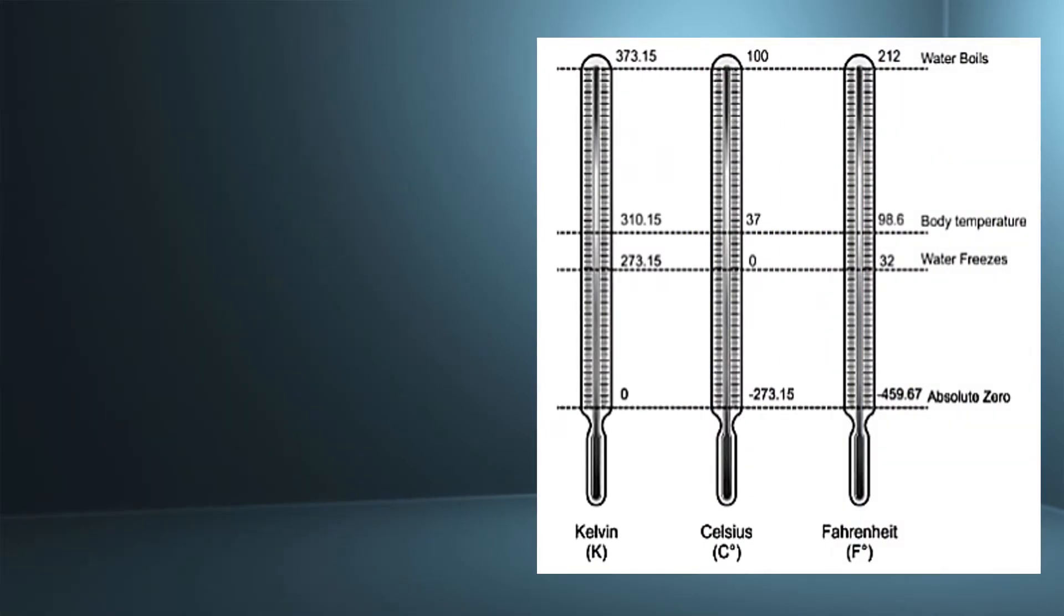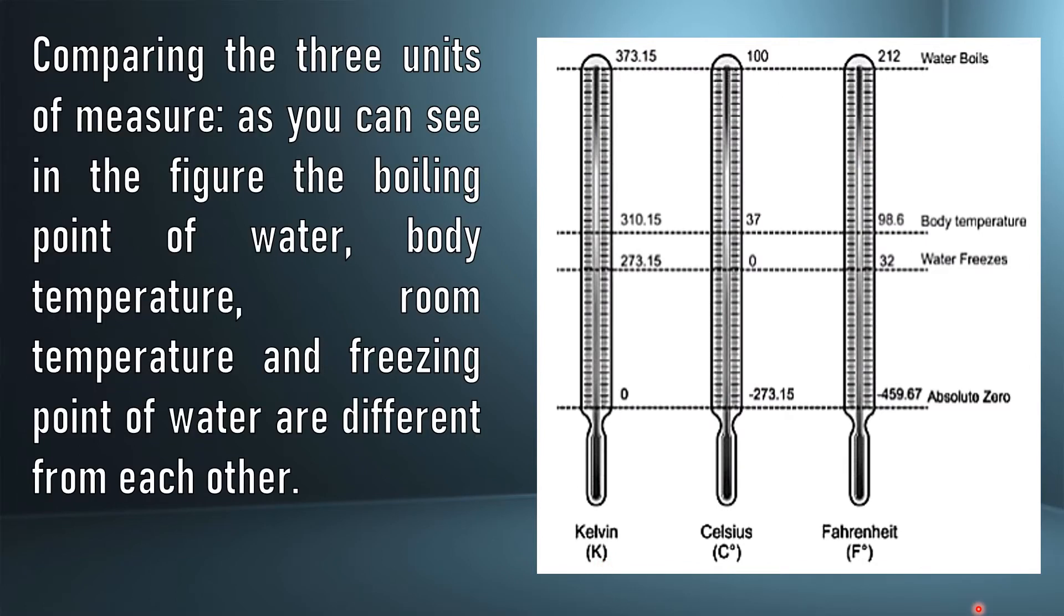In this given figure, we can see the 3 units of temperature, which are the Kelvin, the Celsius, and the Fahrenheit. Comparing the 3 units of measure, as you can see in the figure, the boiling point of water, body temperature, room temperature, and freezing point of water are different from each other.